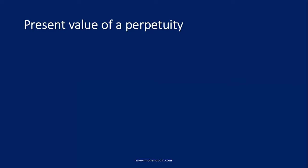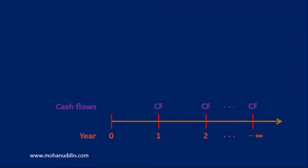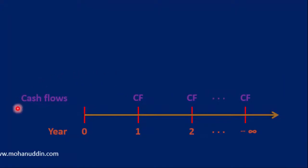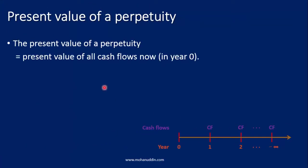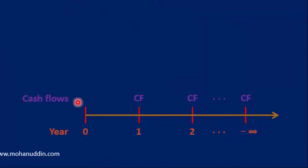To see how to find the present value of a perpetuity, let us look at the cash flow timeline. In this timeline, you can see that the cash flows are equal and also occurring at equal intervals of time — at the end of every year — and it is continuing forever. If we want to find the present value, it must be the present value of all the cash flows.